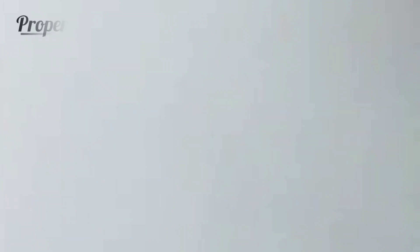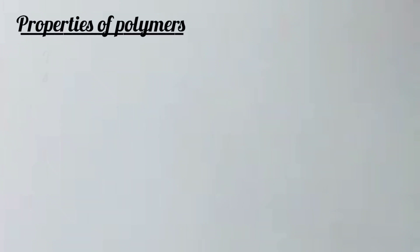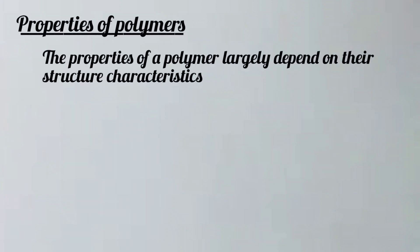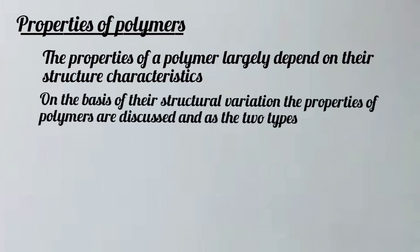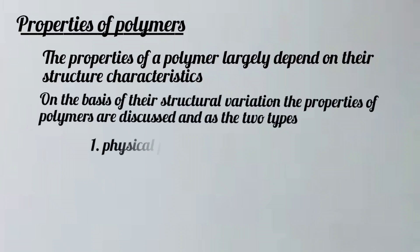In properties of polymers, the properties of polymers largely depend on their structure characters. On the basis of their structure variation, the properties of polymers are discussed as two types: physical properties and mechanical properties.